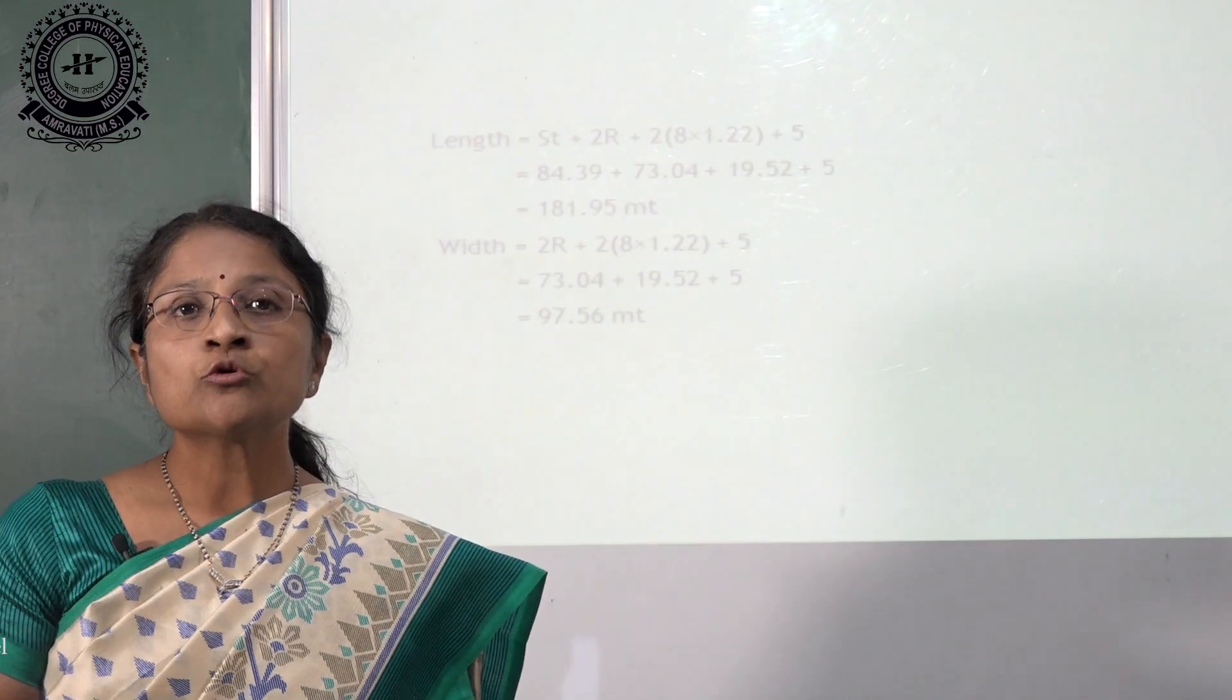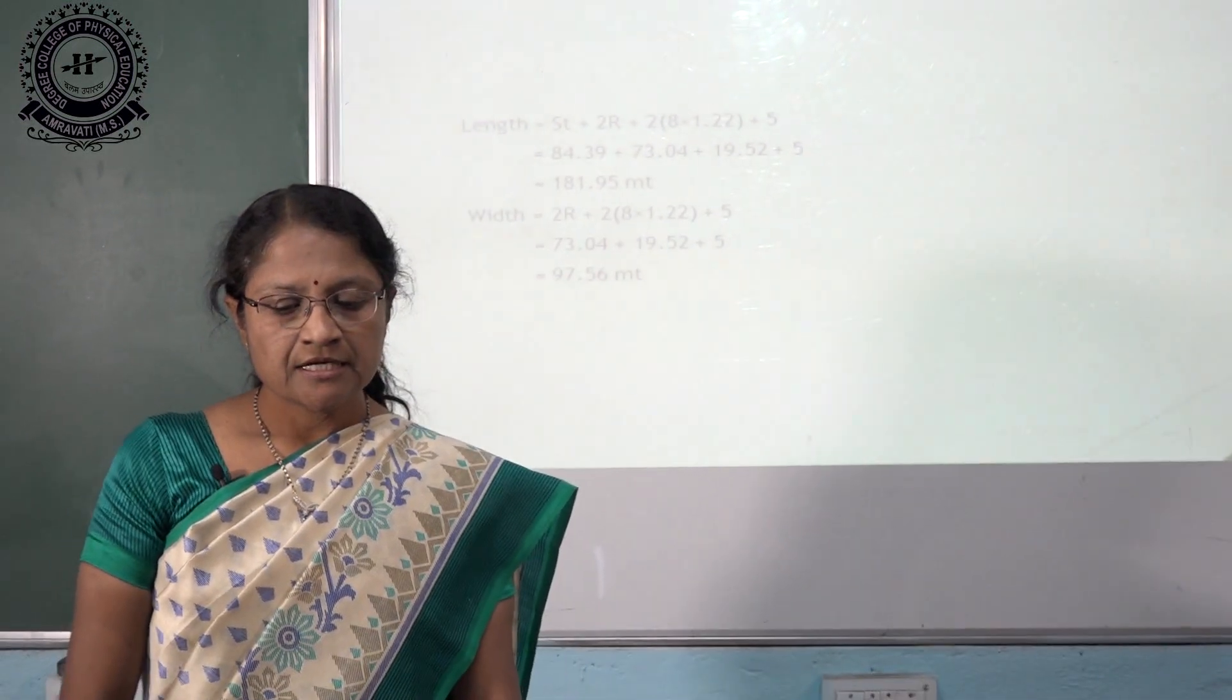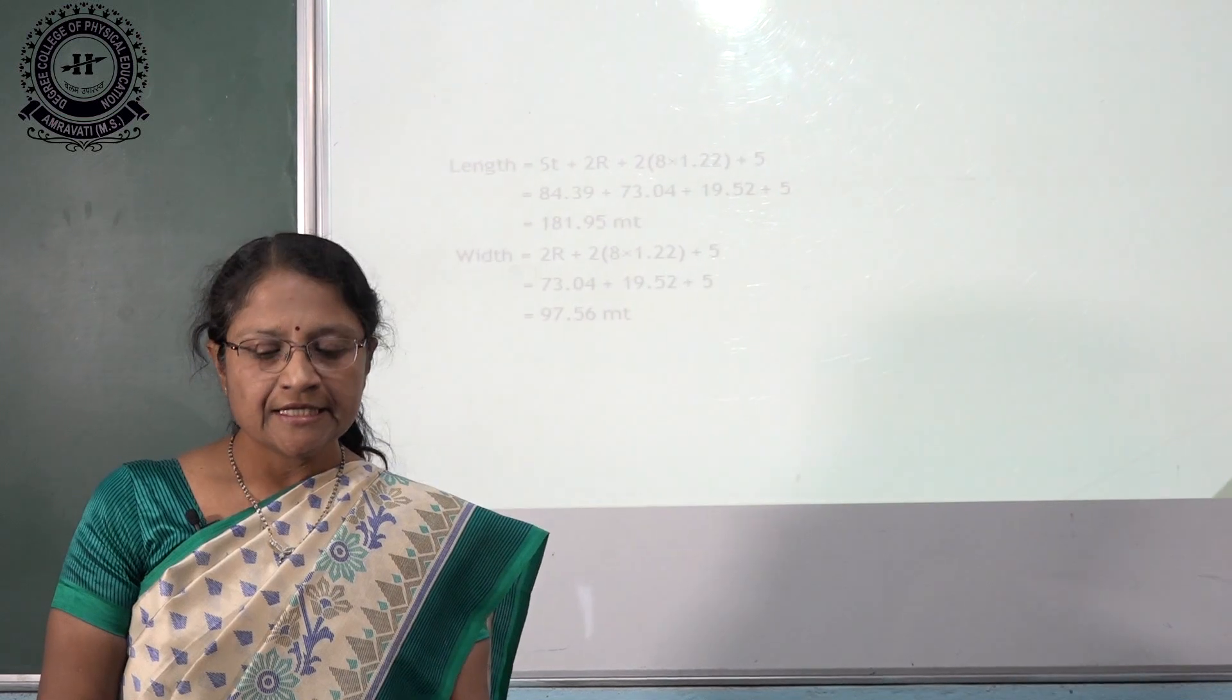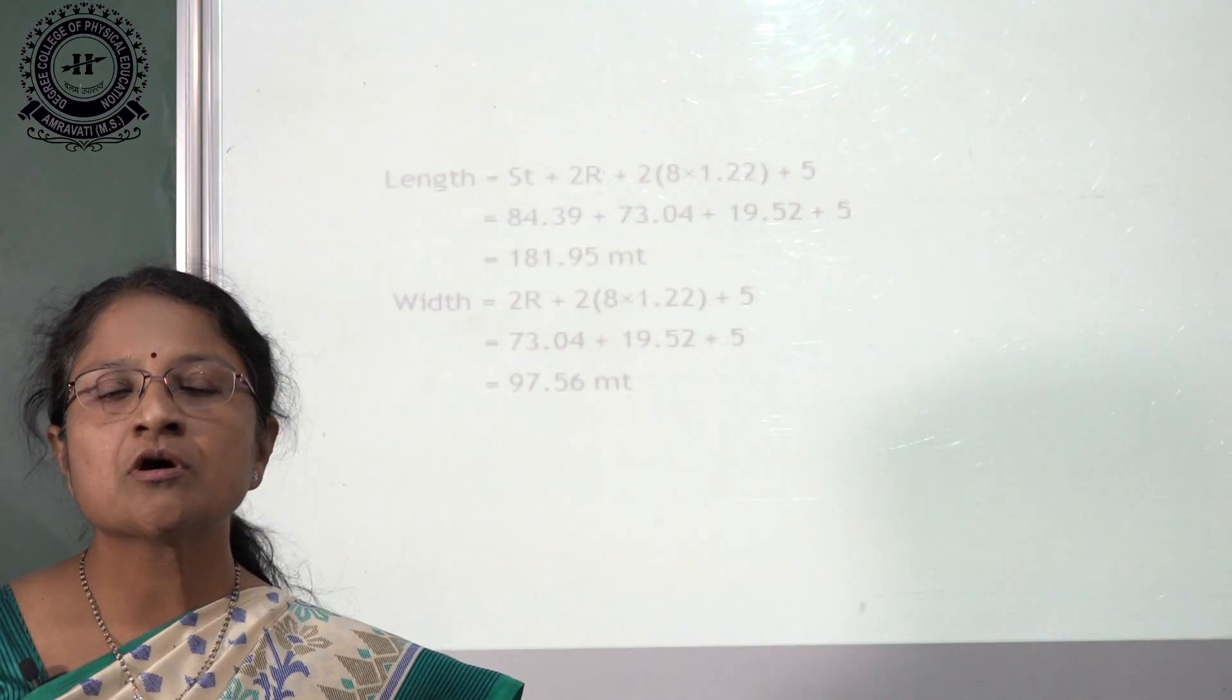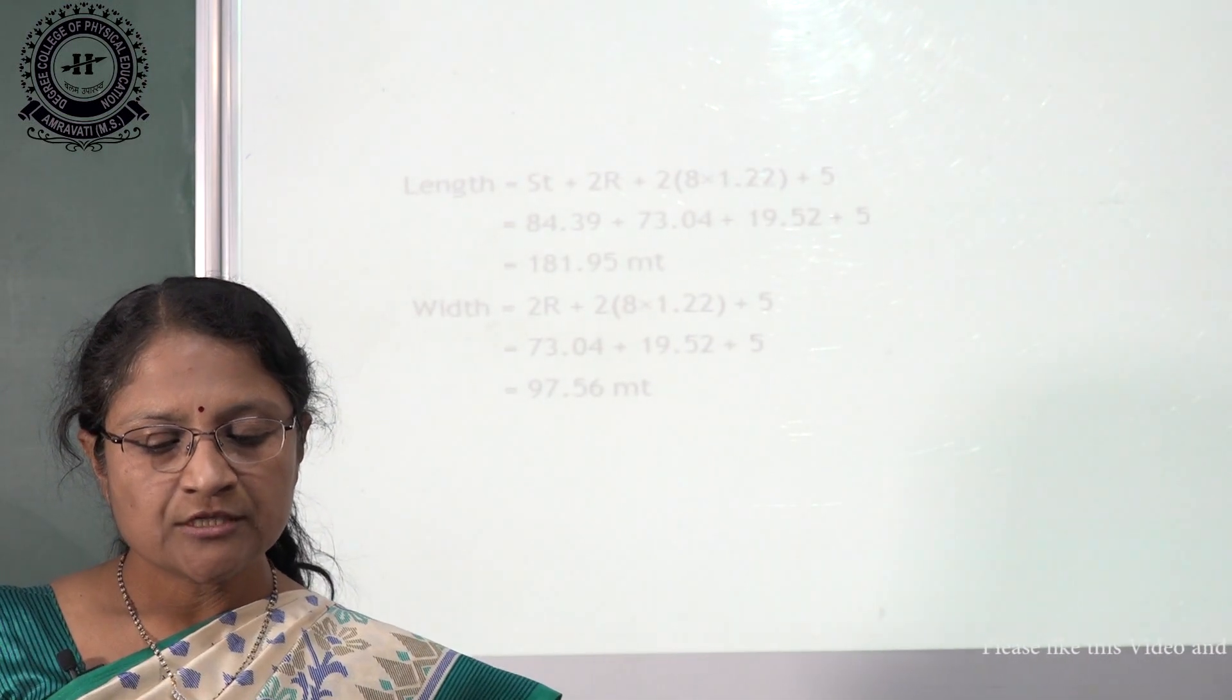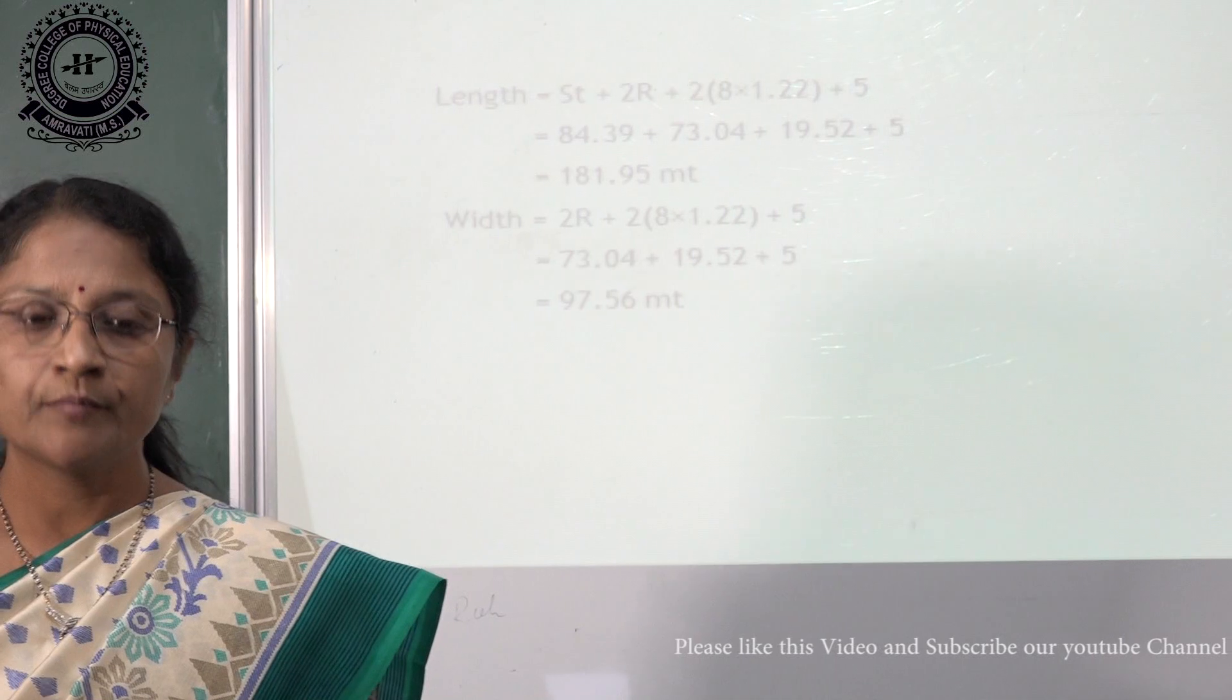Now about total length and width of track. For length: straight value plus 2r means 2 radius plus twice of 8 lanes into 1.22 plus 5 which is extra space. Put the value of straight and radius in the formula. So total value of length is 181.95 meters.